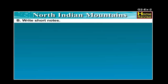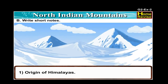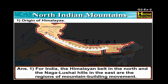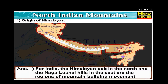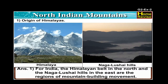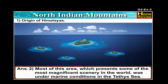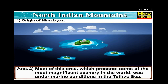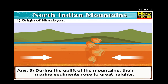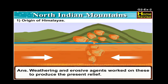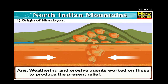B. Write short notes. Number one: Origin of Himalayas. For India, the Himalayan belt in the north and the Naga-Lushai hills in the east are the regions of mountain building movement. Most of this area was under marine condition in the Tethys seas. During the uplift of the mountains, their marine sediments rose to great heights. Weathering and erosive agents worked on these to produce the present relief.